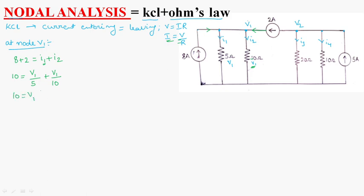Now, taking V1 as common, V1 into 1 by 5 plus 1 by 10, which is equal to V1 into 1 by 5 plus 1 by 10 is 0.3. Finally, we will get V1 is equal to 33.33. This is the voltage at node V1.